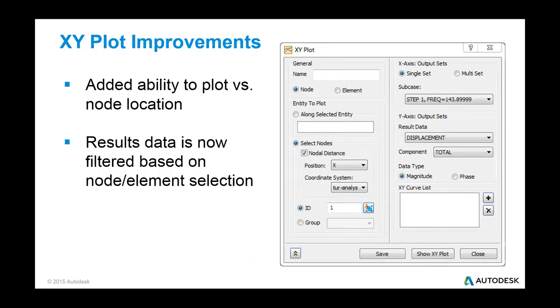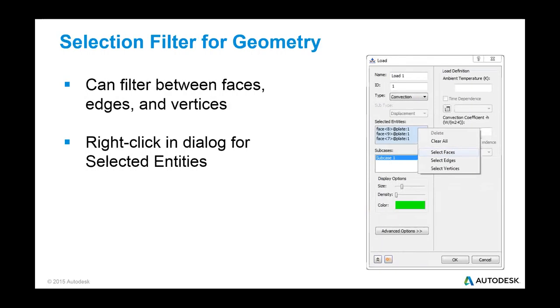So we've also made a few improvements to the options that we have for XY plotting. So now we can plot output as a function of the nodal or elemental location, and then filter the data based on what's being selected. This one's pretty important. It's one of those little things that we added that has a very large impact, and the more I use it, the more I love it. It's relatively simple, but when you're creating loads and constraints, you can right-click in the selected entities box and make sure the type of entity that you want to use is the one of the loads being applied to. This helps make sure that you're only picking the ones that you want to use.